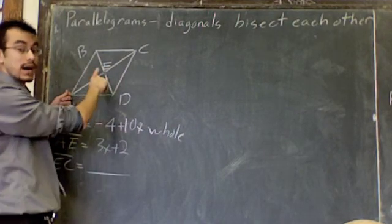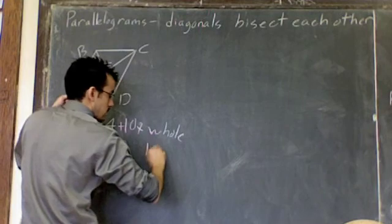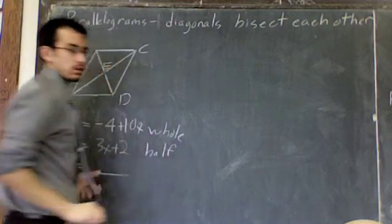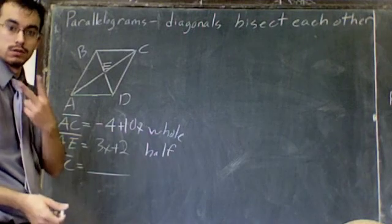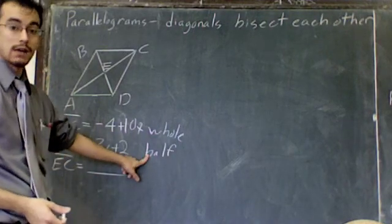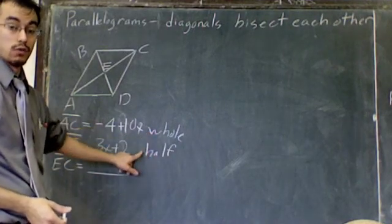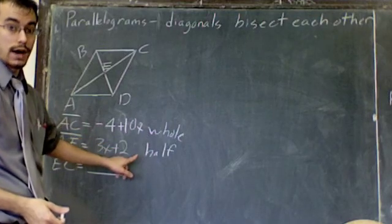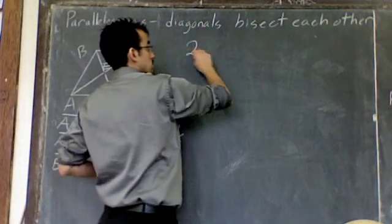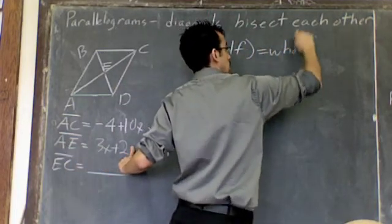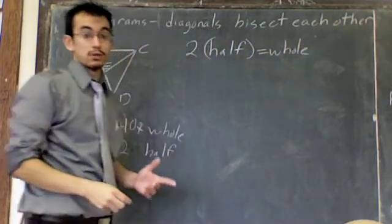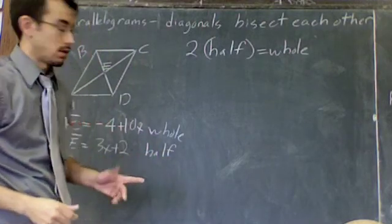Because remember, they bisect each other. AE is half. What you need to remember is how many halves are there in a whole? Two. So, you need two of these halves to make one whole. So, the rule for a half and a whole of a diagonal is that two times the half equals the whole. That's the rule. If you double the half, you should have the same length as the whole.